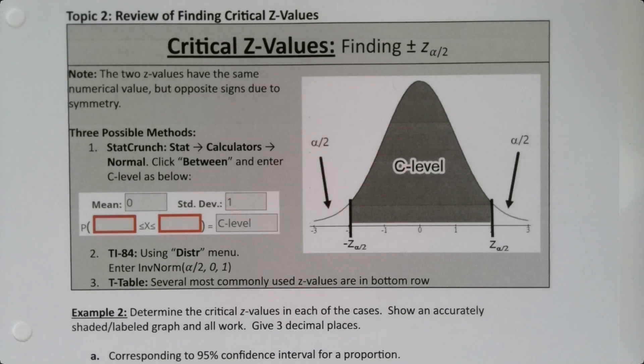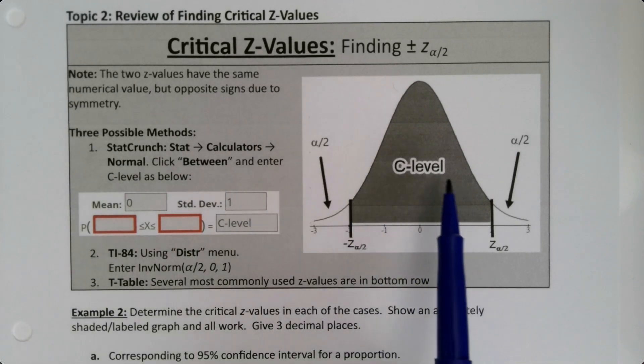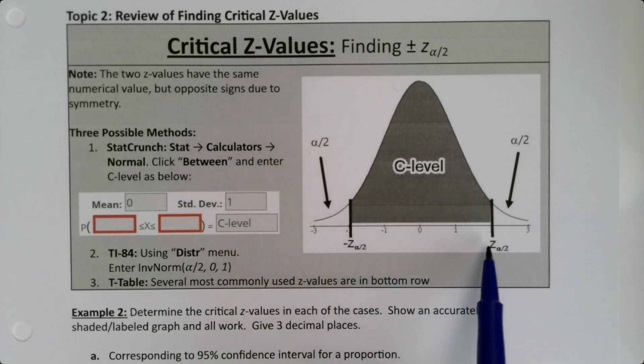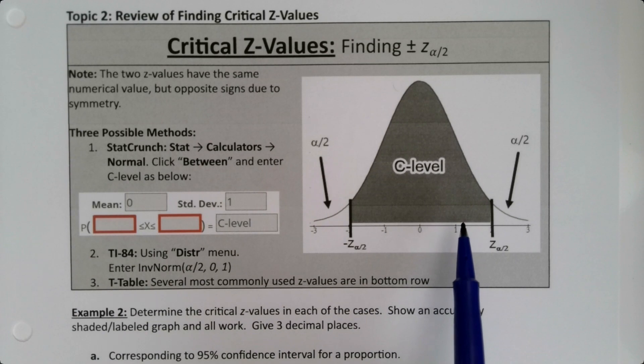In this video, we want to learn how to find critical z-values. Now, what are critical z-values? Well, the confidence level fills up the center portion of a z-curve, and the critical z-values are the left and right boundaries of that confidence level.